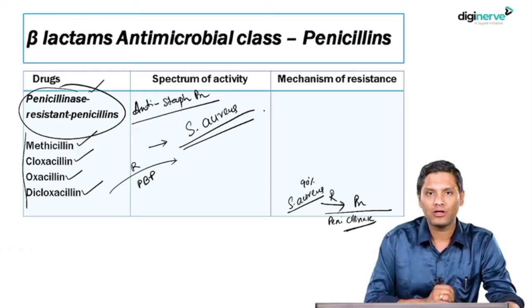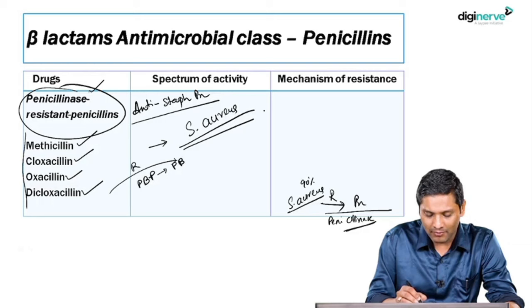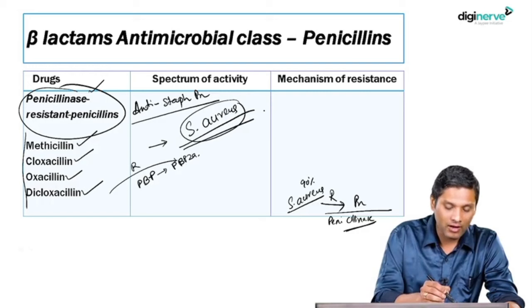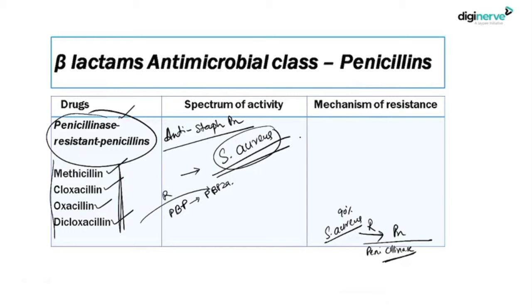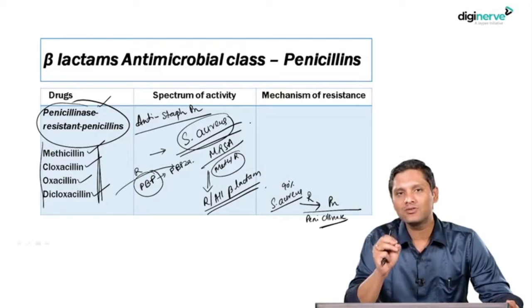Penicillinase-resistant penicillins, also called anti-staphylococcal penicillins, act on Staphylococcus aureus. However, Staph aureus can still be resistant by altering the penicillin-binding protein to PBP2a. When this happens, the Staph aureus becomes resistant to this group — those phenotypes are called MRSA (methicillin-resistant Staph aureus). Though called methicillin-resistant, it is a misnomer — MRSA is virtually resistant to all beta-lactam antibiotics.